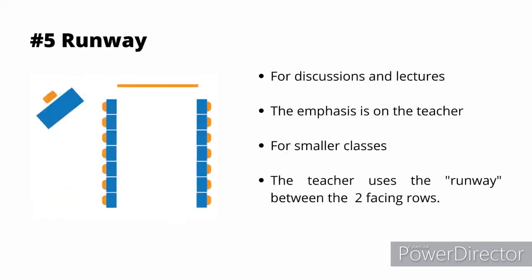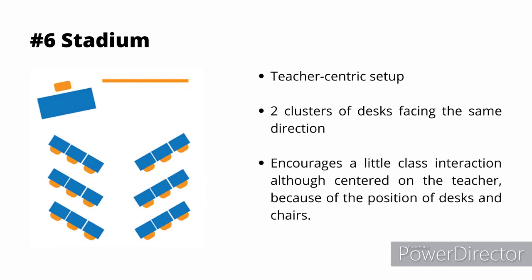Number five is runway. You can use this for discussions and lectures because the emphasis is on the teacher. This is popular for smaller classes — the teacher uses the runway between the two facing rows. Number six is stadium. This arrangement is another teacher-centered setup where two clusters of desks are facing the same direction. It encourages a little class interaction, although centered on the teacher because of the position of the desks and chairs.